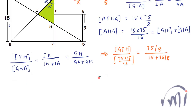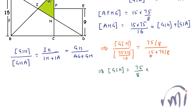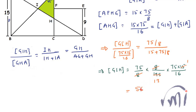Solving for the area of triangle GIH: it equals (75/8) divided by (15 plus 75/8), multiplied by (75 times 15 divided by 16). The denominator 15 plus 75/8 equals 120/8 plus 75/8 equals 195/8. After cancellation, this gives 75 squared — which is 5625 — divided by 13 times 16, that is 208. So the area of the shaded region equals 5625/208.